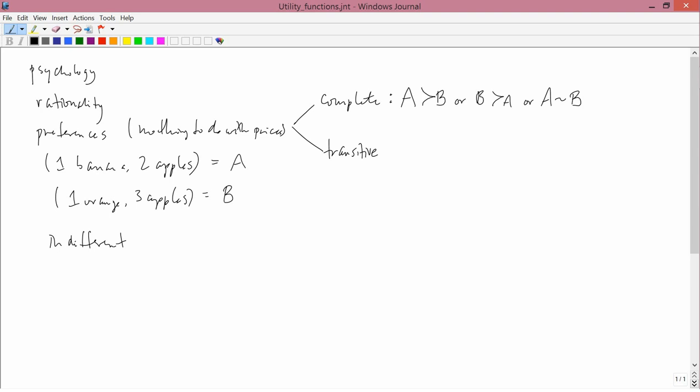The other assumption that we're going to have to make is transitivity, which would be written like this. If the consumer prefers A to B, and the consumer prefers B to some other bundle C, then the consumer prefers A to C. This is a fairly straightforward assumption, and if there really are only three bundles, A, B, and C, then it's usually satisfied.